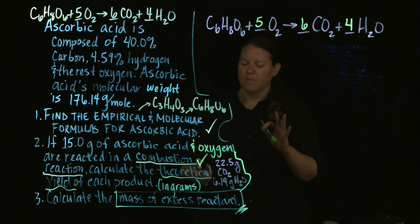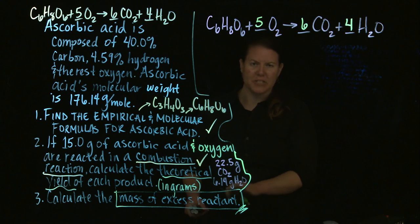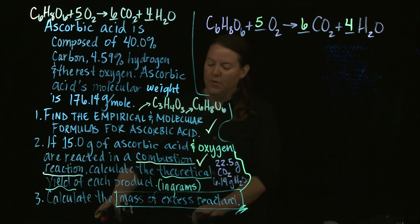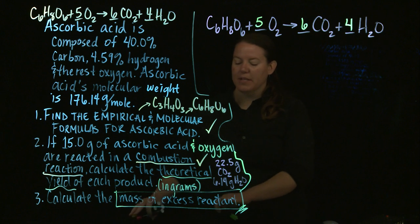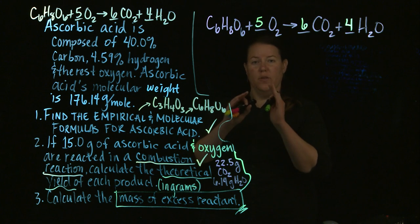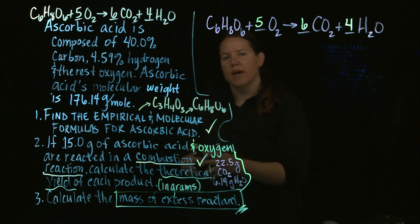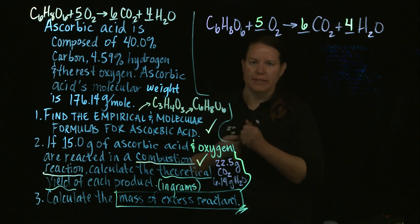You can do this in two different ways. The first way that people technically teach this is they say, if you want to calculate the mass of excess reactant, you have to figure out how much of the excess reactant you used. And the way you can figure that out is by using the limiting reactant.